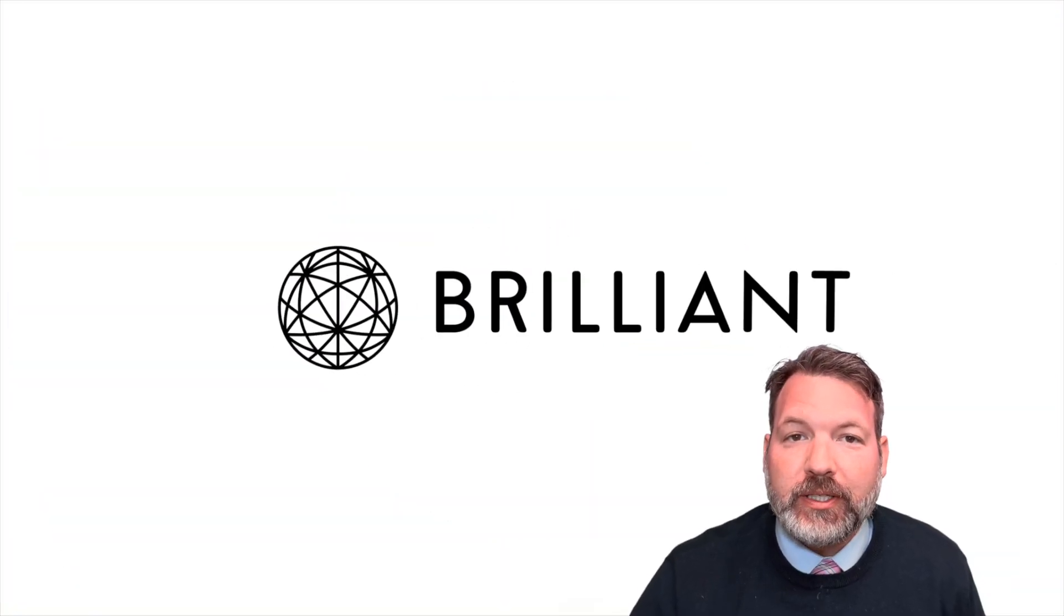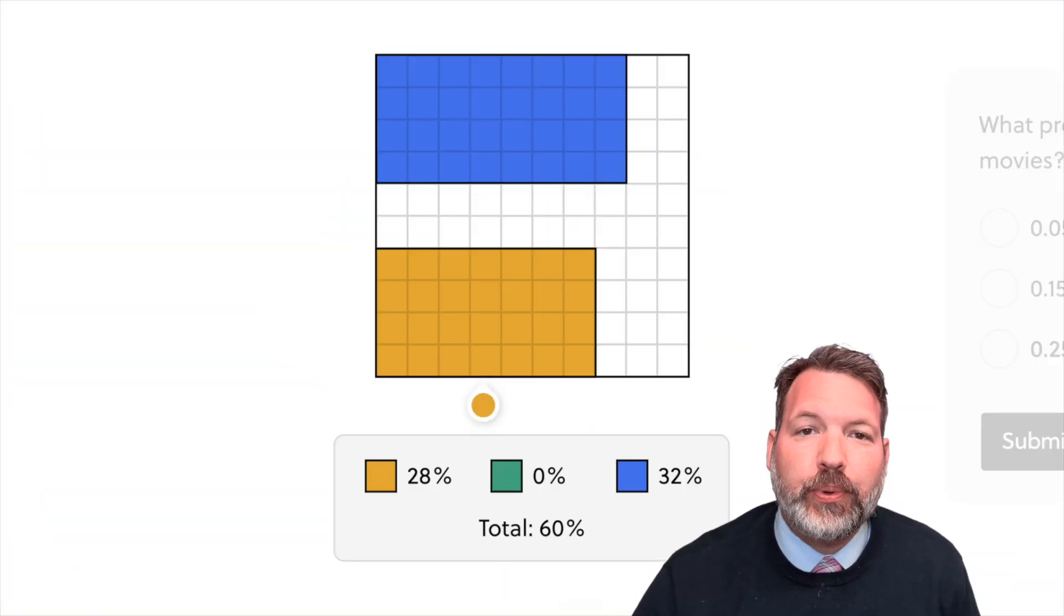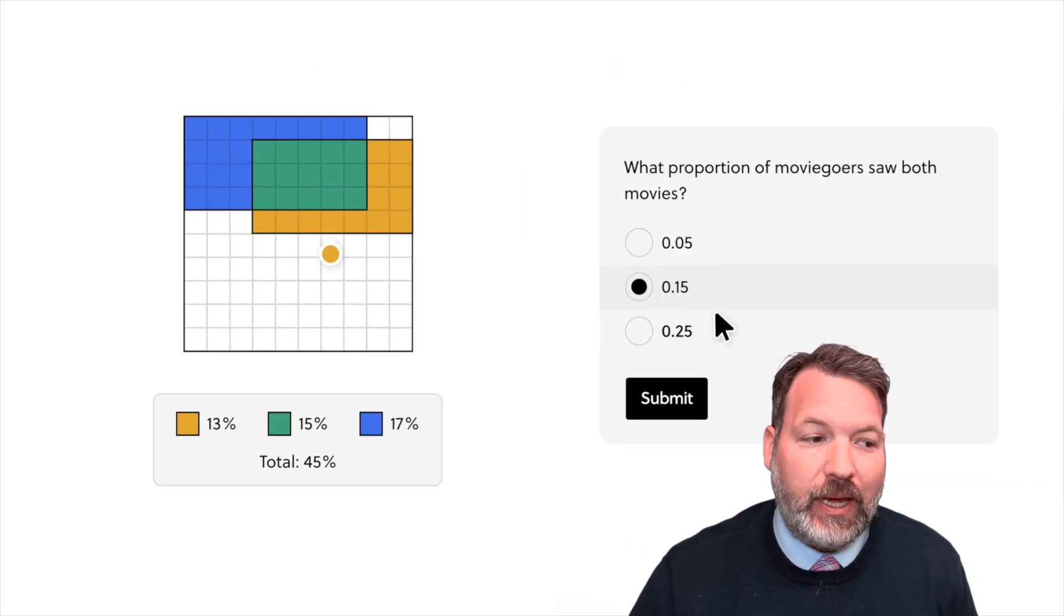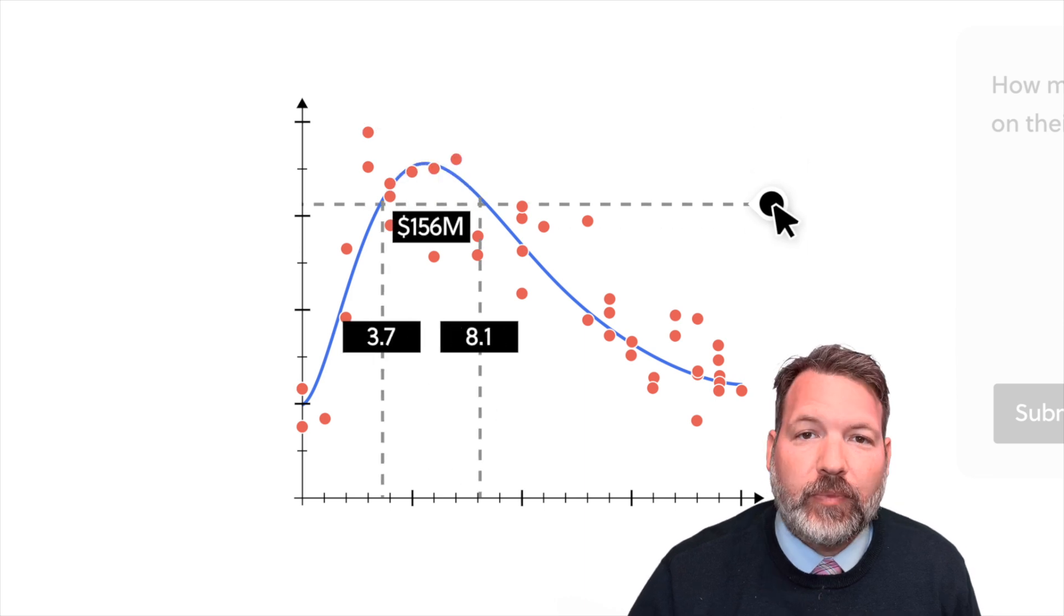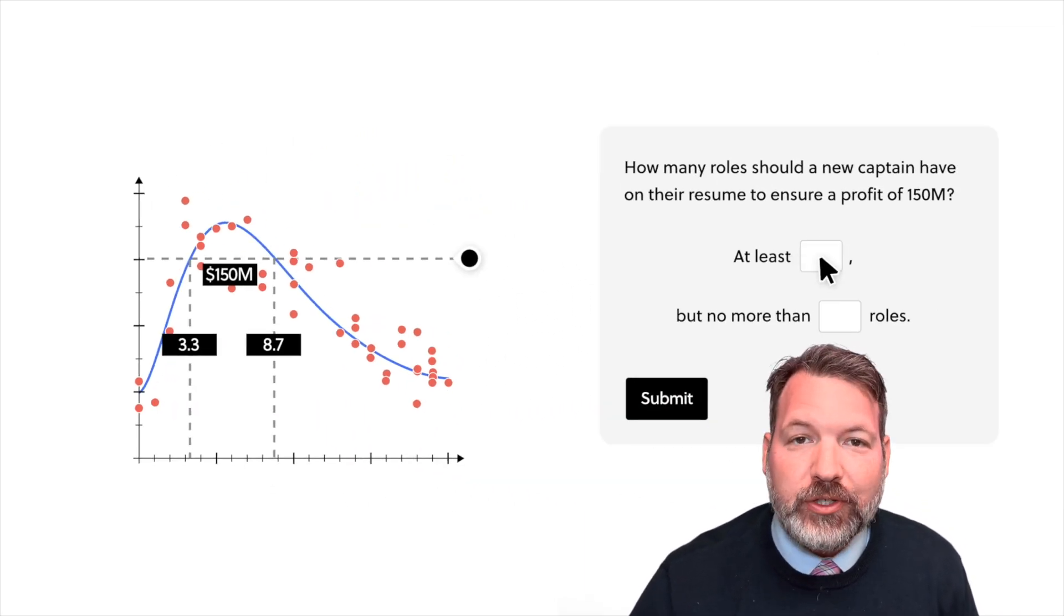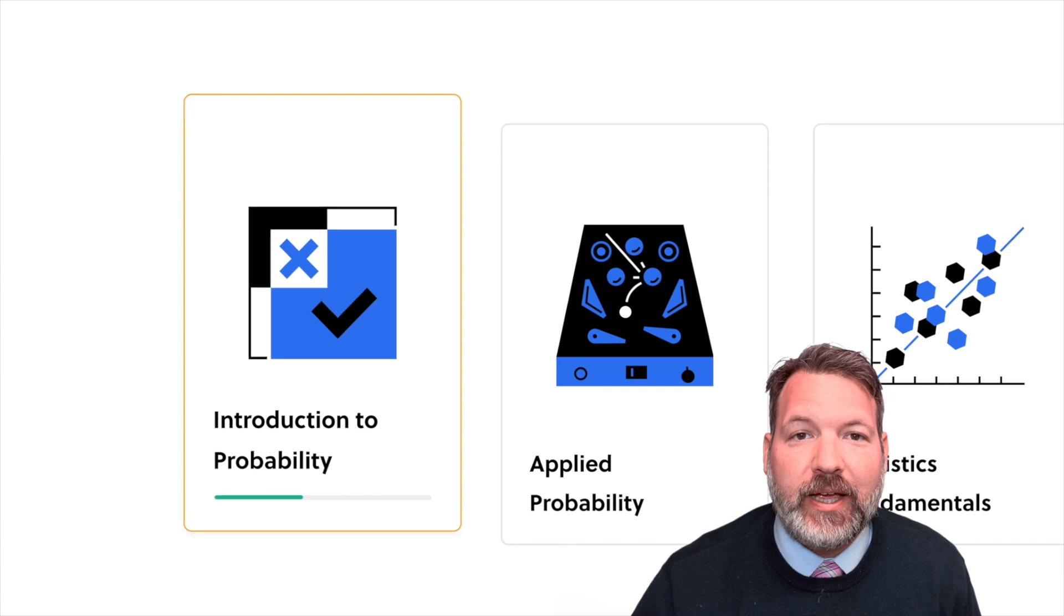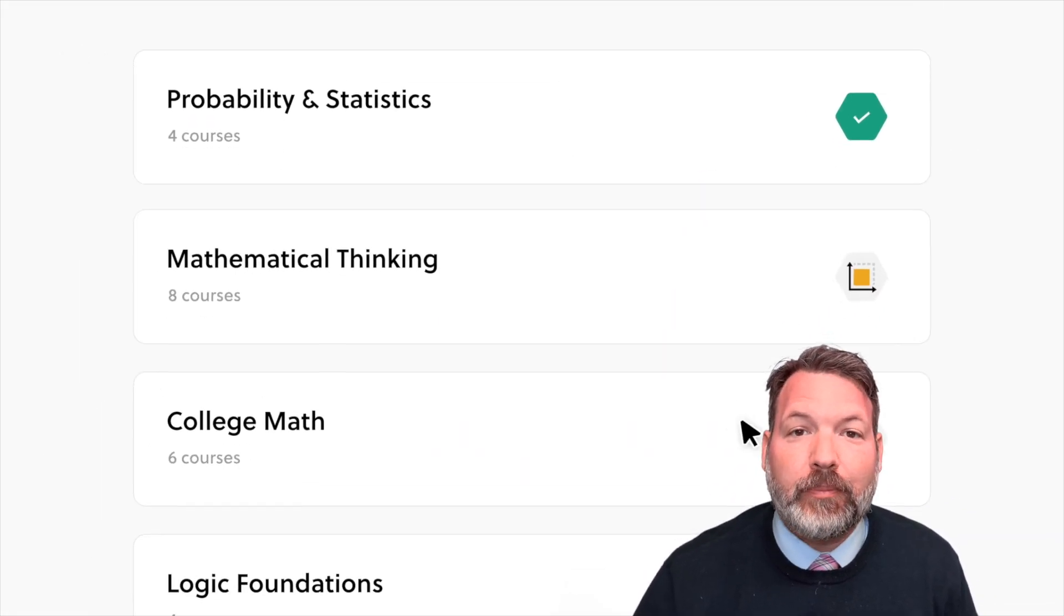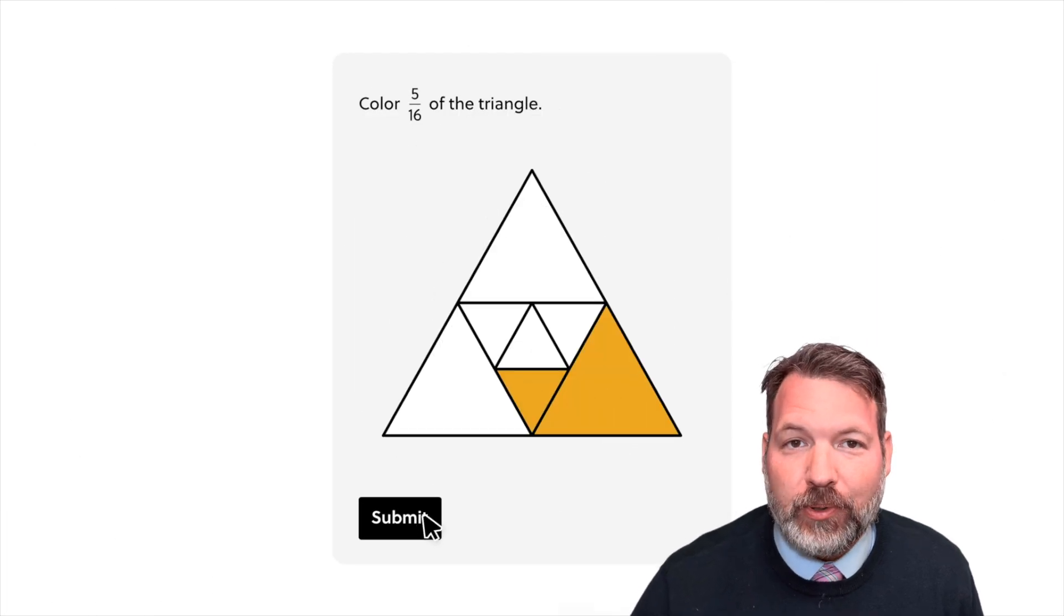Brilliant has built an amazing platform for helping people develop the intuitions it would take to move between these different kinds of representations. Their platform helps you learn mathematics interactively, and they have thousands of lessons. You can find lessons on AI, on data science, on foundational mathematics, even lessons on math contest problems.